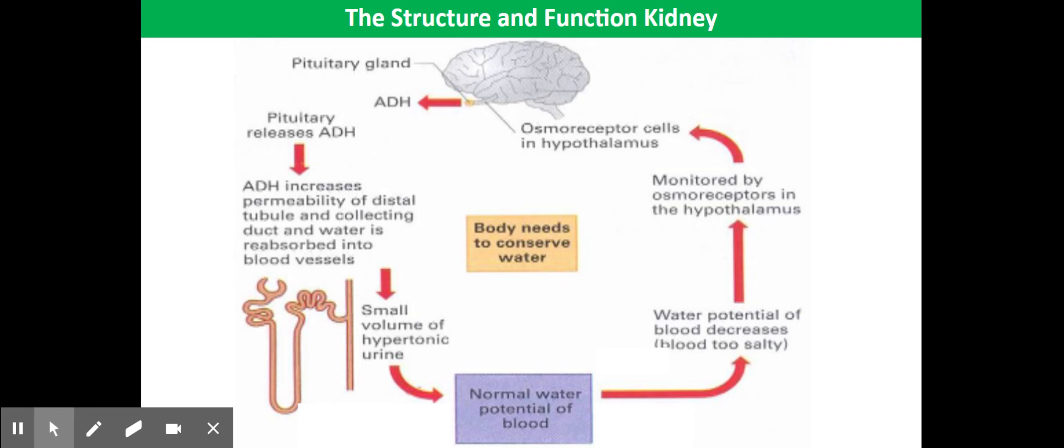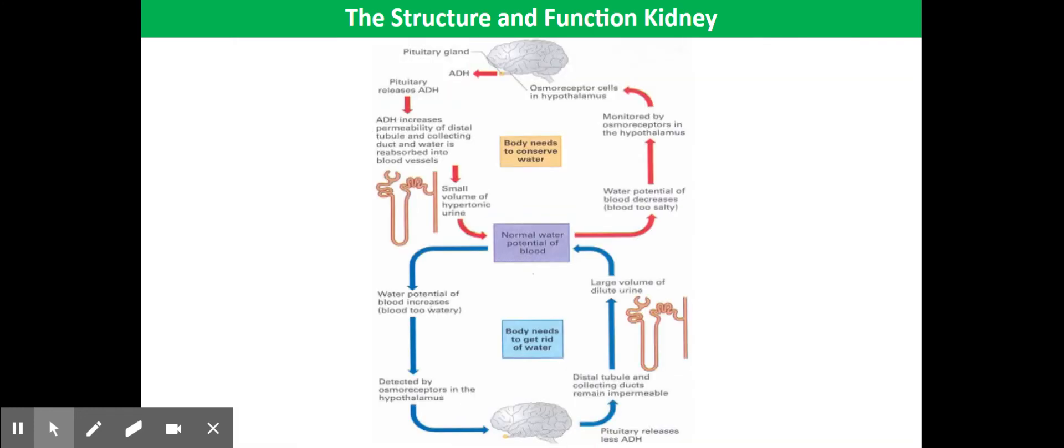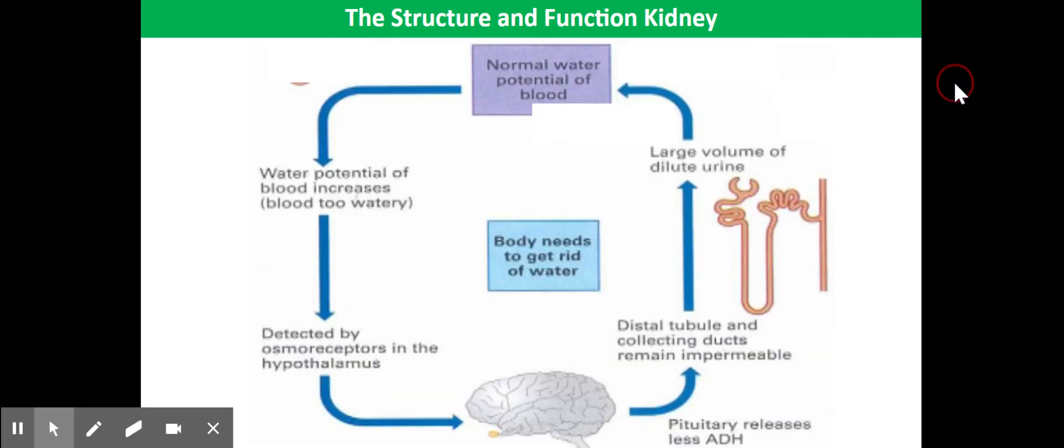Hopefully that all makes sense, because here we have these correcting mechanisms that enable us to regulate the water potential of our blood. Whenever our blood water potential gets too high, the corrective mechanisms bring it back to normal, or if it gets too low, the corrective mechanisms bring it back to normal. Because of that, this is a really good example of negative feedback in your body.